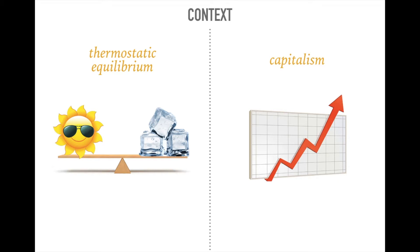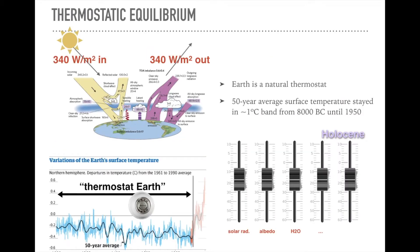So why are these two things in conflict? The thermostatic equilibrium — basically the earth is a natural thermostat. For about the last 10,000 years it's been in a relatively stable temperature state. Over the long term there have been huge temperature shifts like ice ages, but for the last 10,000 years, about 8,000 BC until 1950, the temperature averaged over 50 years only ranged within about a one degree Celsius or two degrees Fahrenheit band.